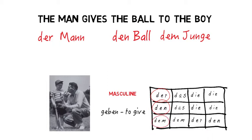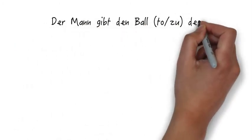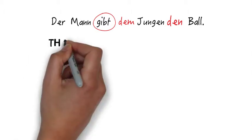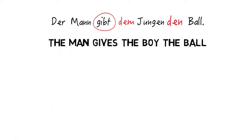You might think then that the sentence 'the man gives the ball to the boy' would be 'der Mann gibt den Ball zu dem Jungen'. And you'd be close — we just need to put the objects in reverse order. So it's: der Mann gibt dem Jungen den Ball. Why? Because German, in this situation using this verb, wants the dative object — the 'to whom / for whom' object — before the accusative object. And it works in English too: 'the man gives the boy the ball'. No problem.